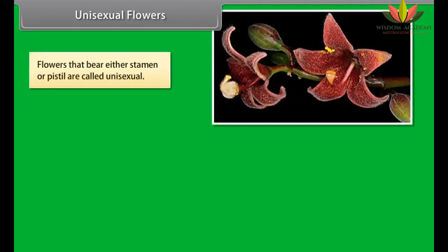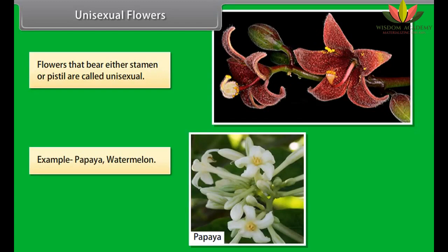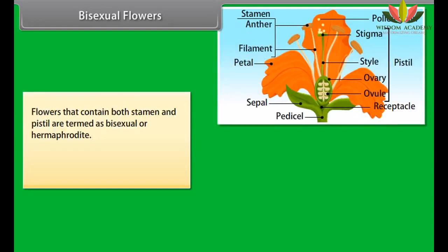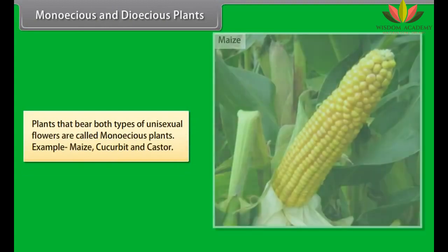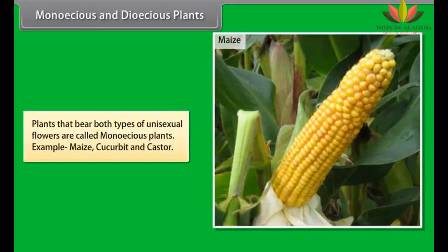Let us conduct an activity to understand the structure of a seed. We will soak a few seeds of Bengal gram and a few seeds of maize and keep them overnight. Next morning, we drain the excess water and cover the seeds with wet cloth for a day. Next day, we cut open both types of seeds into halves. We observe that the Bengal gram seed has a seed coat, radicle, plumule, and two cotyledons, while the maize seed has a seed coat, radicle, plumule, and one cotyledon.